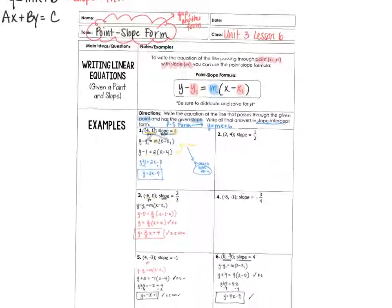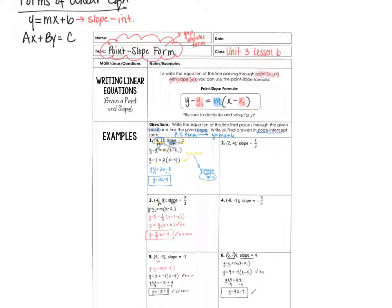And that is Unit 3, Lesson 6 — point-slope form. Thanks for watching.